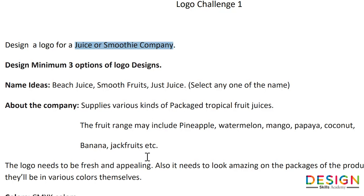The logo needs to be fresh and appealing because it's a fruit juice company — it needs to portray freshness. It also needs to look amazing on the packages of the product, as the packaging itself will be very colorful and vibrant, so the logo needs to go well with the product. You may use CMYK colors because the logo is going to be printed on many verticals. The target audience is 18 to 35 years, mainly travel enthusiasts or health-conscious people. What you were supposed to do is research, presentation, mind mapping, and a mood board for the product.